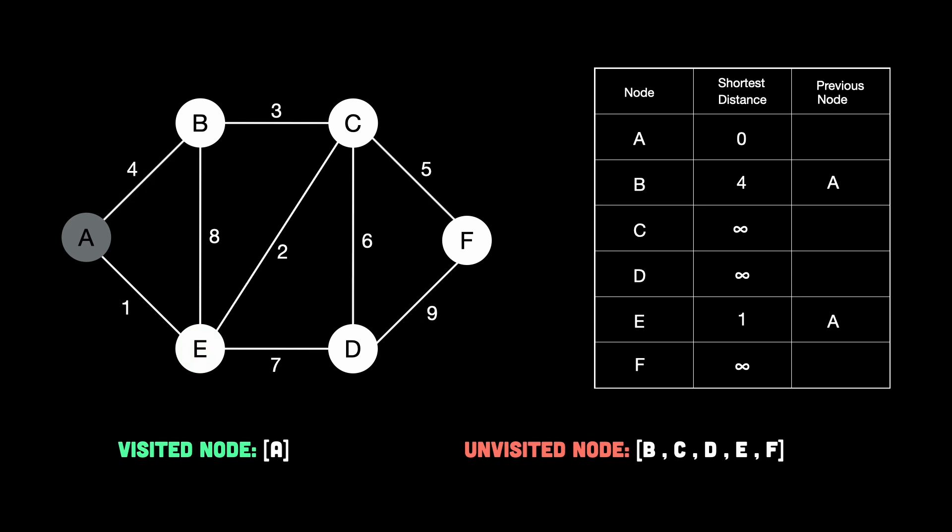Alright, now let's move on to step 2. We check our table again and look for which node has the smallest distance right now among the unvisited ones. And that's E with distance 1. So what do we do? We visit E. Now let's check E's neighbors one by one, which are B, C, and D. Now from E to B, it costs 8. So total equals 1, which is the shortest distance to reach E, plus 8, which is equal to 9. But wait, shortest distance to reach B is already 4, which is smaller. So we don't update anything here.